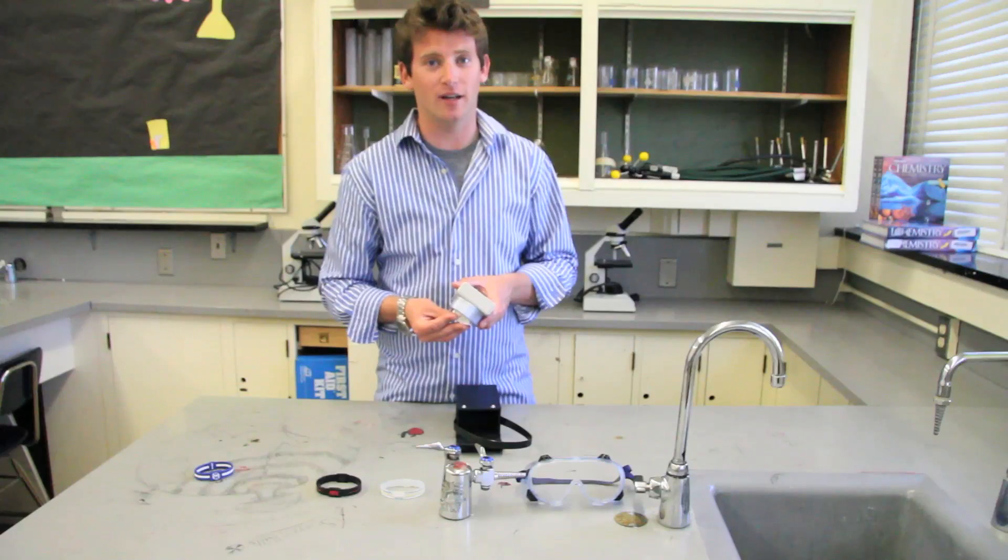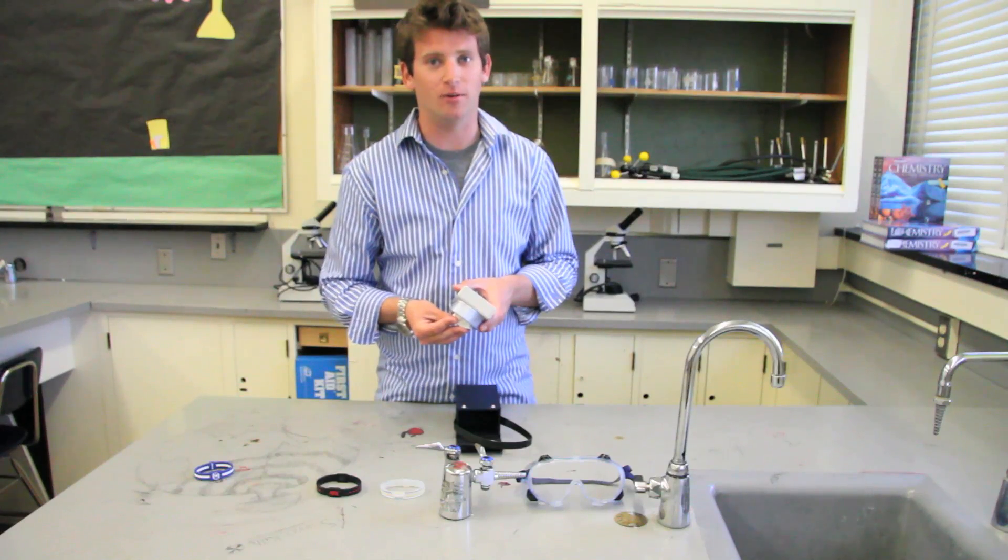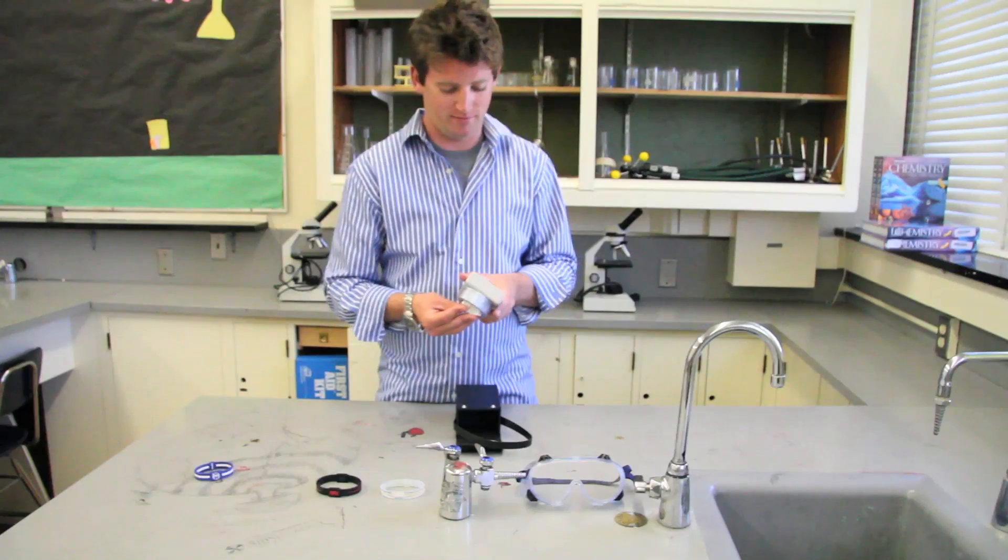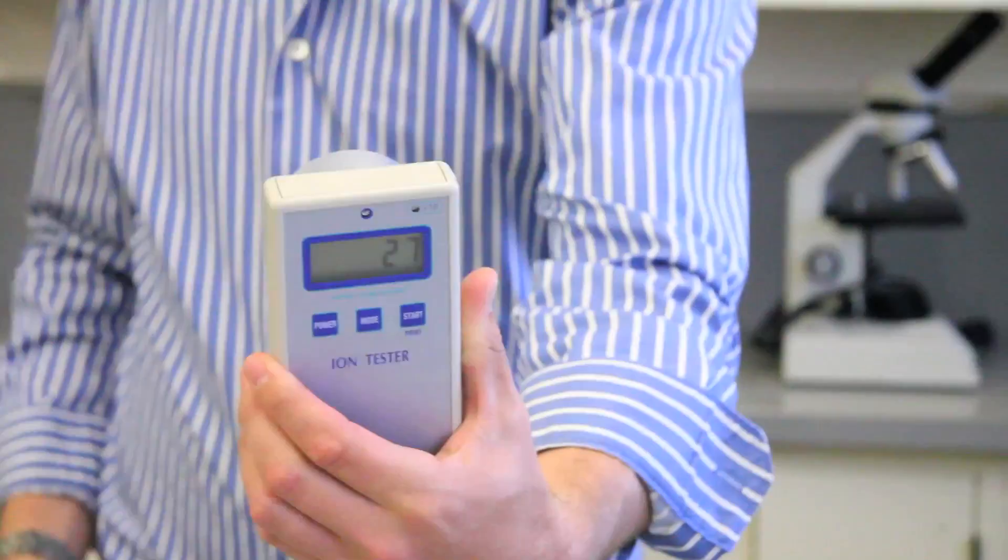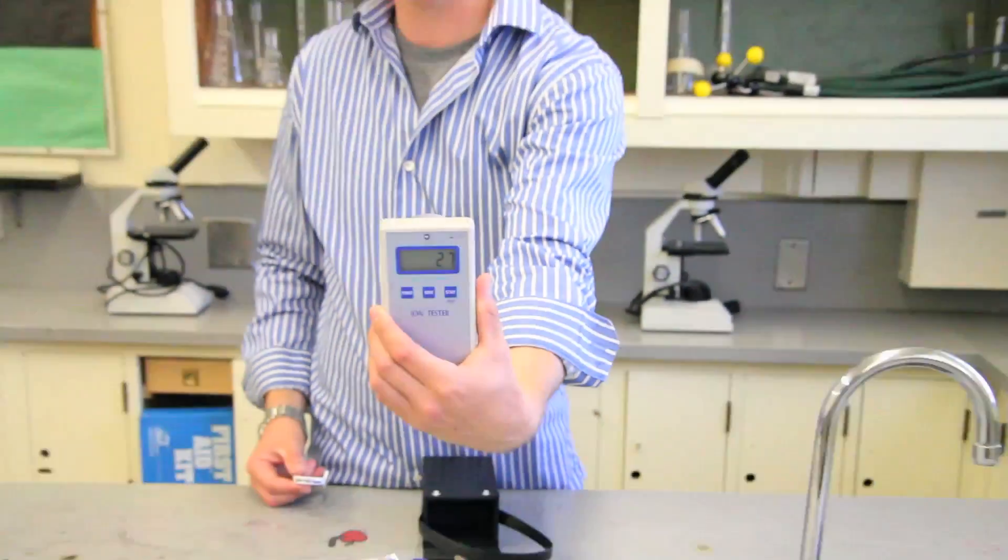And then, of course, there is the godfather, Pierce Howard, who wrote the book, The Owner's Manual of the Brain. And our reading is in. And the verdict is 27 negative ions per cubic centimeter.